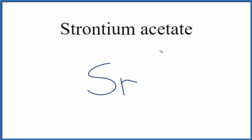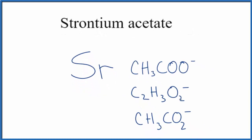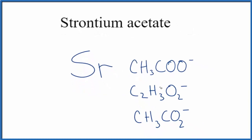For the acetate ion, there are several ways we could write this. Each one of these has the same number of carbons, hydrogens, and oxygens, and each one has a negative charge. They're just different ways to write it. I prefer this one right here, but you'll occasionally see these as well when people write the formula for strontium acetate.